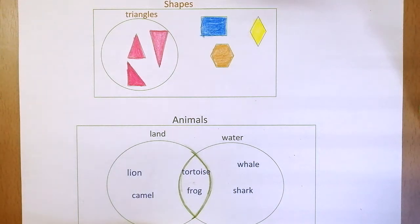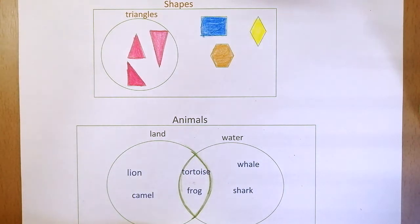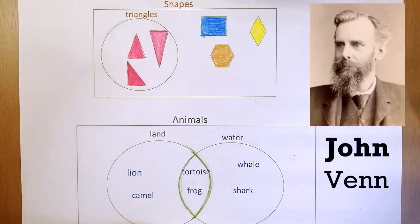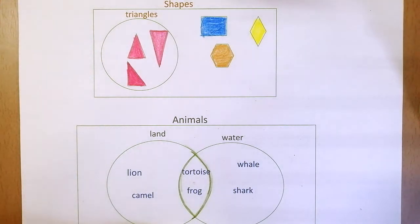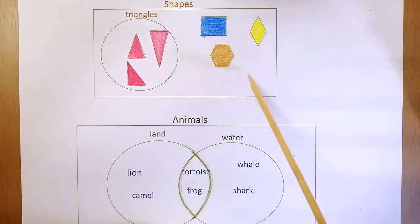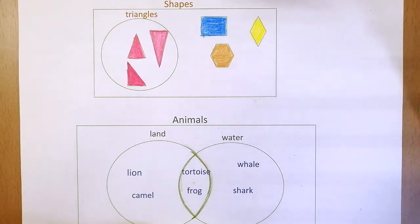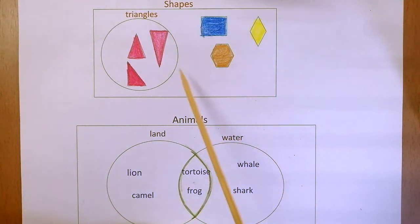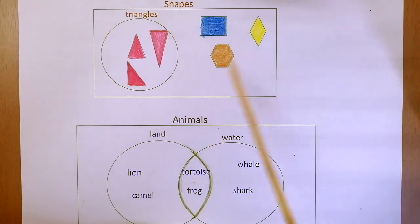Hello students! In this video you will learn to show information using a Venn diagram. You have already learned about lists, tables, bar graphs, and pictograms in the previous class. Today let's learn about the Venn diagram, which was invented by John Venn. It is a way of picturing relationships between different groups of things, used to show how things are alike and different. The data is sorted by their traits, attributes, or characteristics.